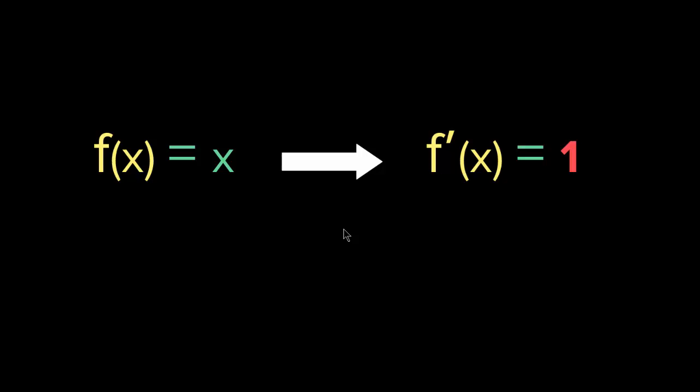So the derivative of a constant is zero. The derivative of f of x equaling x is one. And this will be it for the constant rule. Let's check out the second rule.